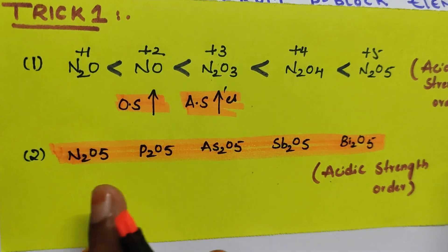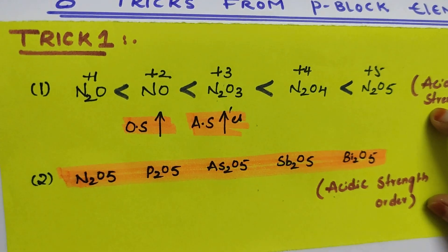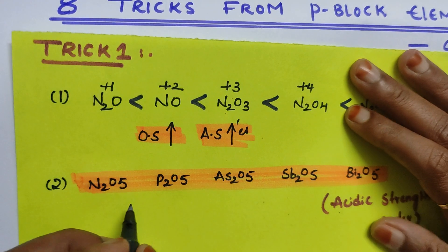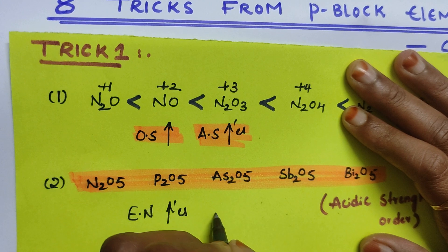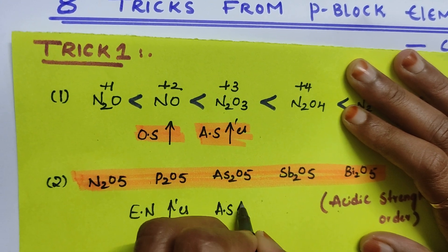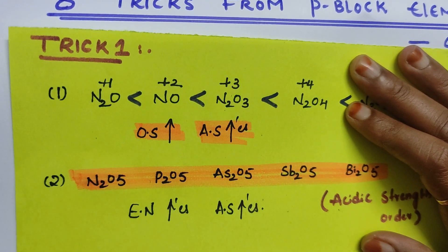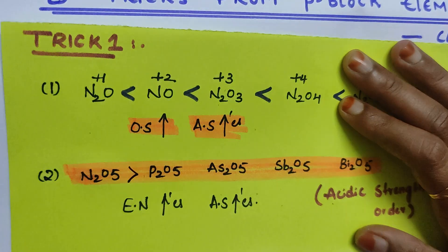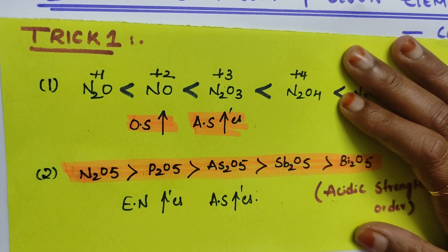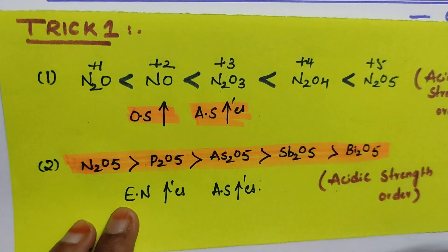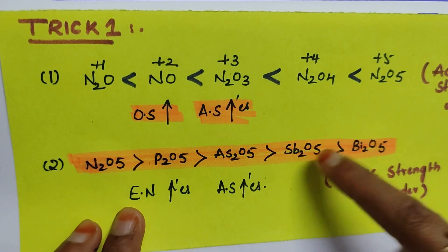Here the central atom is different: nitrogen, phosphorus, arsenic, antimony, bismuth. Whenever the central atom is different, if electronegativity of the atom increases, acidic strength increases. From top to bottom of the group, electronegativity decreases, so acidic strength also decreases. So the most acidic is N2O5. The summary of this trick: when it's the same element, see the oxidation state; when it's a different element, see the electronegativity.